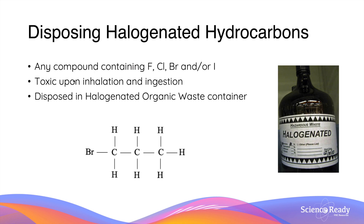In addition, any organic compounds containing the halogens — that is fluorine, chlorine, bromine, and/or iodine — must be disposed into a special container called the halogenated organic waste container, as you can see on the right hand side. This is because these compounds which contain halogens are extremely toxic, especially when you inhale or ingest them in small quantities. Have a great day. Thank you.